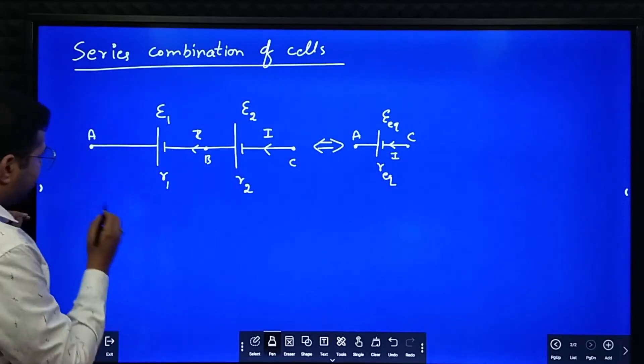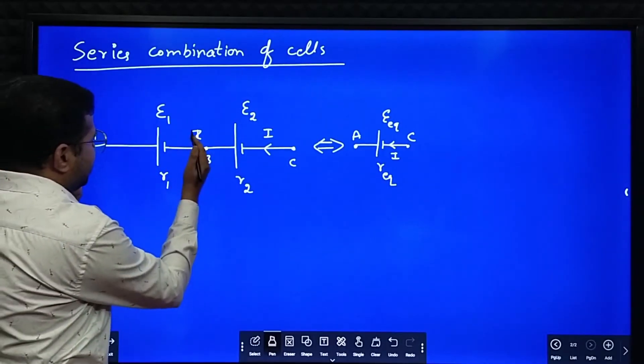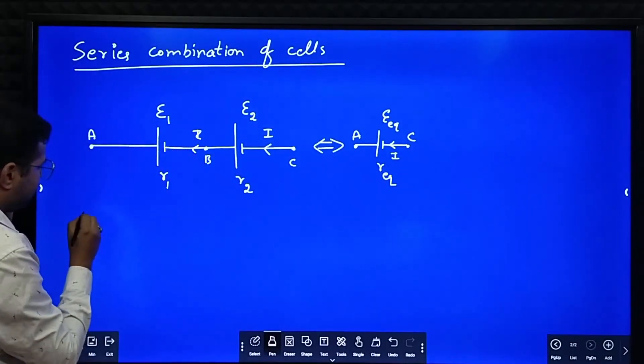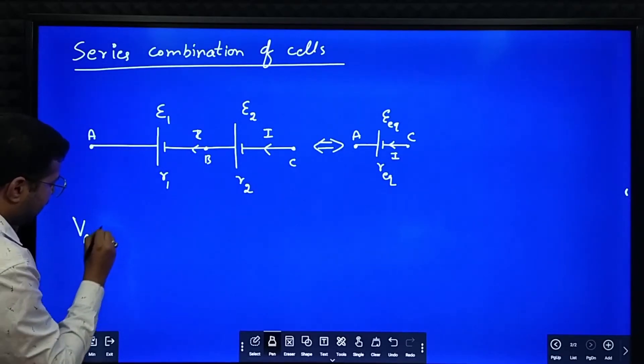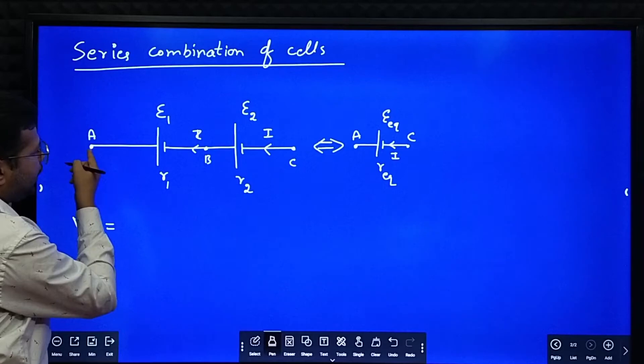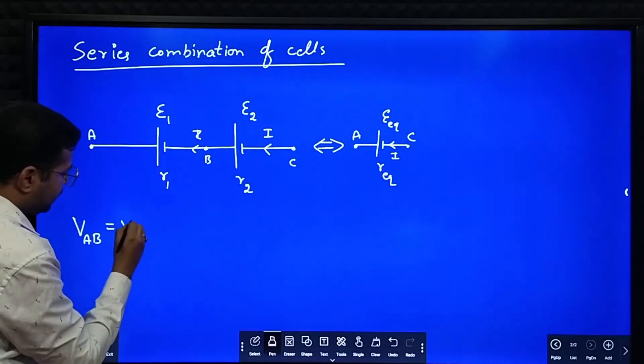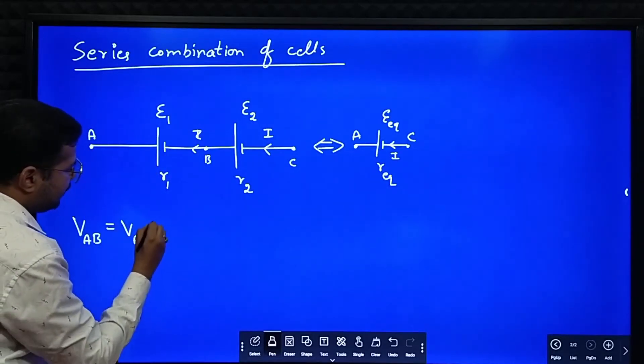So what we'll do? Here we calculate what is the potential difference between A and B first. Potential difference between A and B, VAB is equal to VA minus VB.